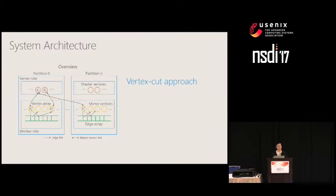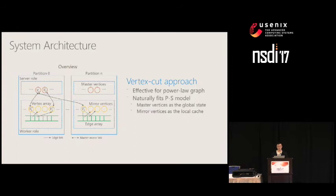The remaining replicas are called mirrors, and each maintains a local cached copy. We adopt the vertex cut approach because it is proved to be effective in handling parallel graphs, and it connects naturally to the parameter server model. The master versions of all vertices' data can be treated as the global state stored on the server side of the parameter server.